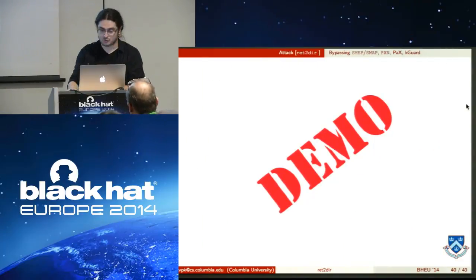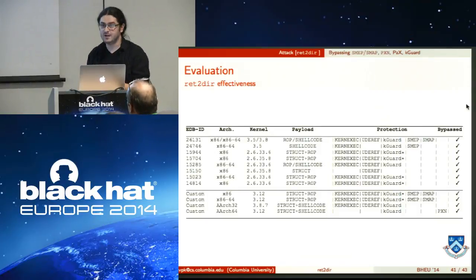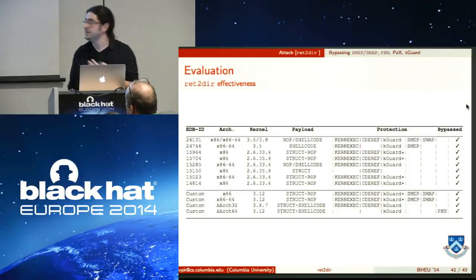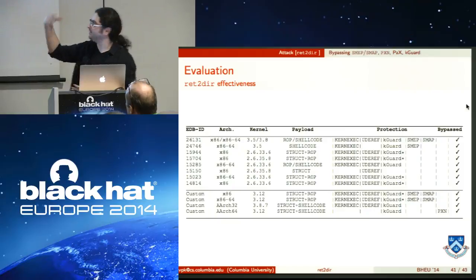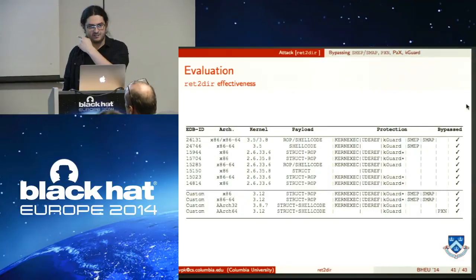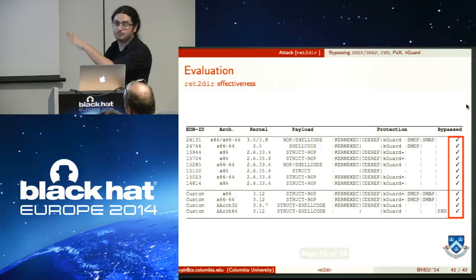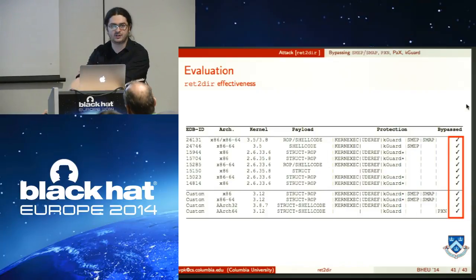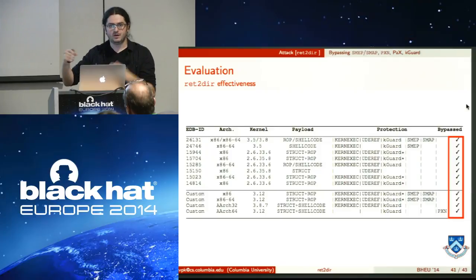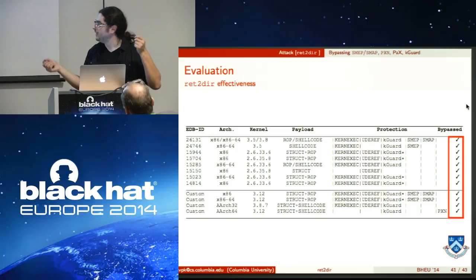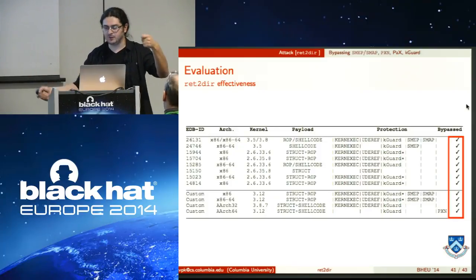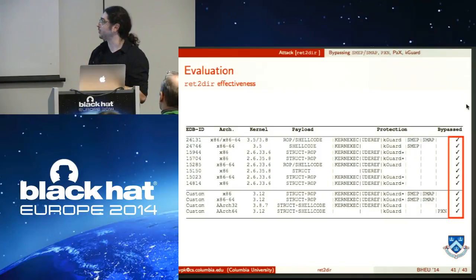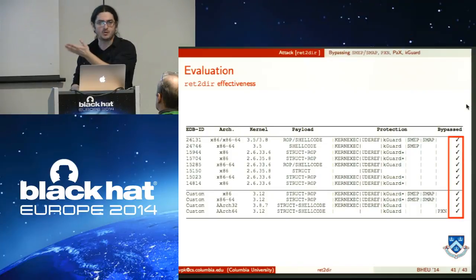We applied this technique to multiple exploits from ExploitDB, tested them on protected kernels to confirm they were blocked, then modified them using Ret2Dir and ran them again. In all cases, we managed to bypass the deployed protections. To be clear: this doesn't mean the protections are flawed — they are good and should be kept. The root problem is the kernel's FISMAP region, which directly maps memory and creates aliases between different protection domains — user space and kernel space — that can be exploited.